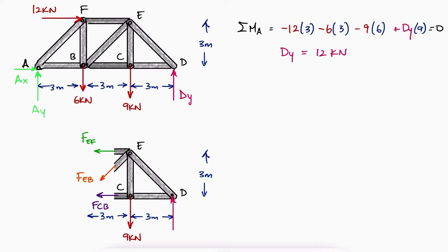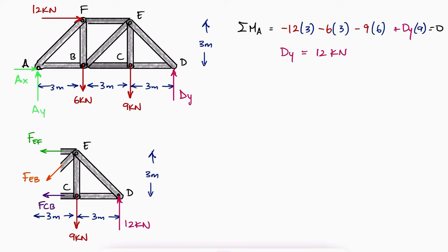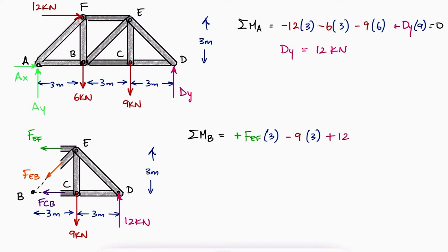With this value, we can use the method of sections to write a sum of moments about a point where two of the three unknown variables are not present. For example, a sum of moments about B would allow us to solve for FEF, since the lines of action of FCB and FEB pass through point B.